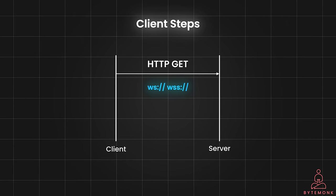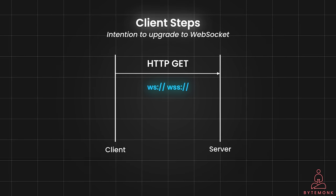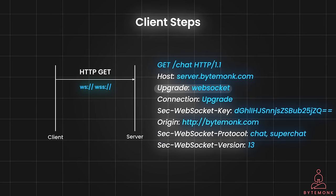The client sends an HTTP GET request with specific headers to indicate the intention to upgrade to WebSocket. The Upgrade: WebSocket header tells the server that the client wants to upgrade the connection. The Connection: Upgrade header informs the server that the client desires an upgrade from the current connection protocol. The Sec-WebSocket-Key header contains a randomly generated base64-encoded string unique to this handshake, which will be used by the server to verify the handshake later.